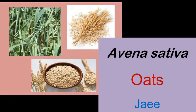The next plant is oats. These days we hear a lot about it. Avena sativa, commonly known in Hindi as jai. It is rich in magnesium, phosphorus, manganese, iron, zinc, vitamin B1, B5, and antioxidants.